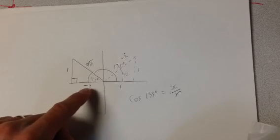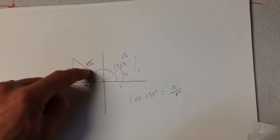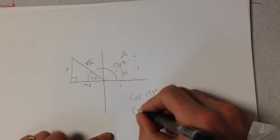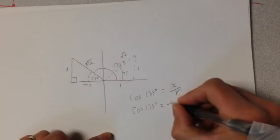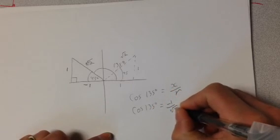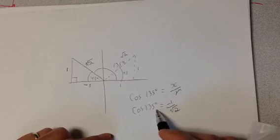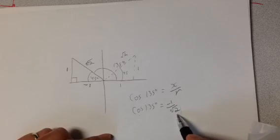And our r value is root 2. So this is still our special triangle with a side length of 1, another side length of 1, and a hypotenuse of root 2. But the x value is negative 1. That makes the cosine of 135 degrees, negative 1, over root 2. You can verify this for yourself with your calculator. Find the cosine of 135 degrees. Take negative 1 and divide it by root 2, and you should see that you end up with the same number.